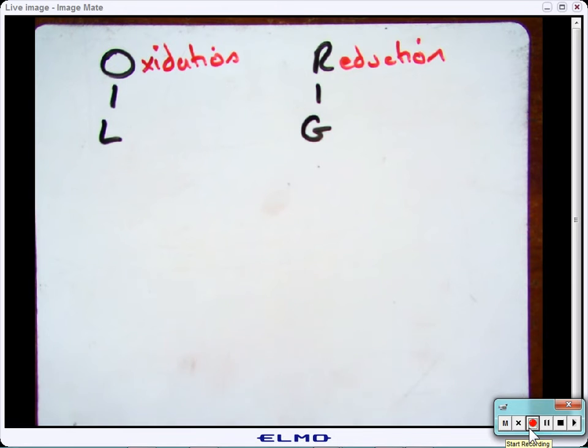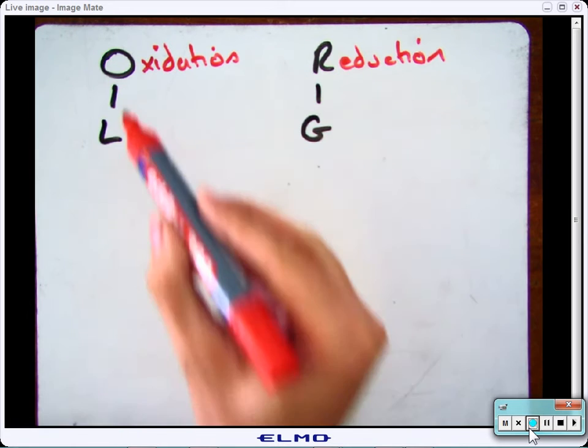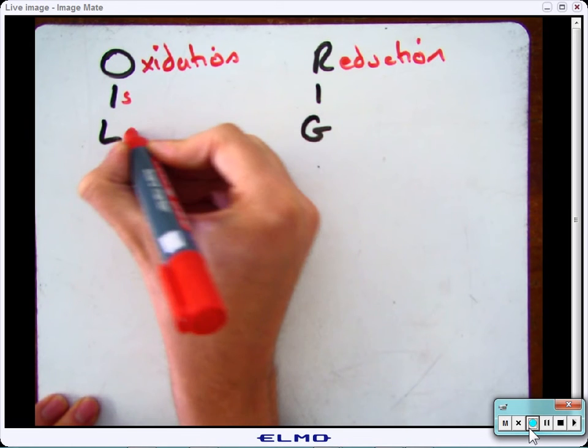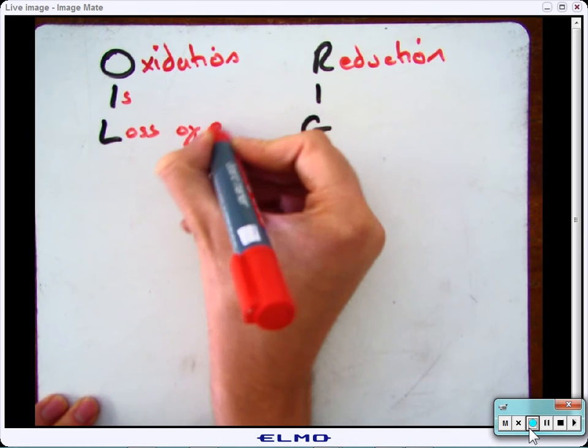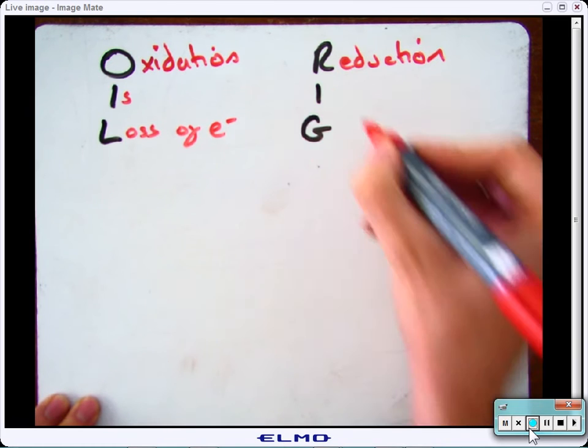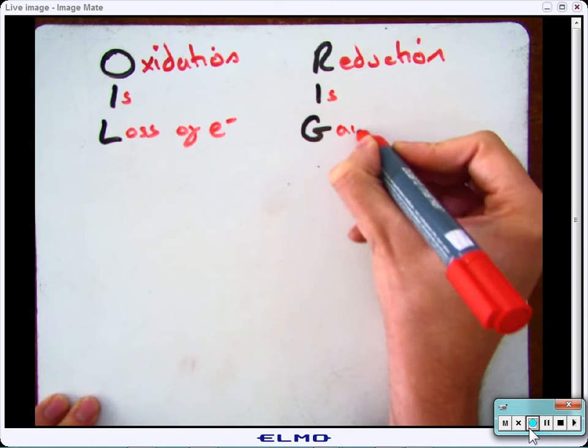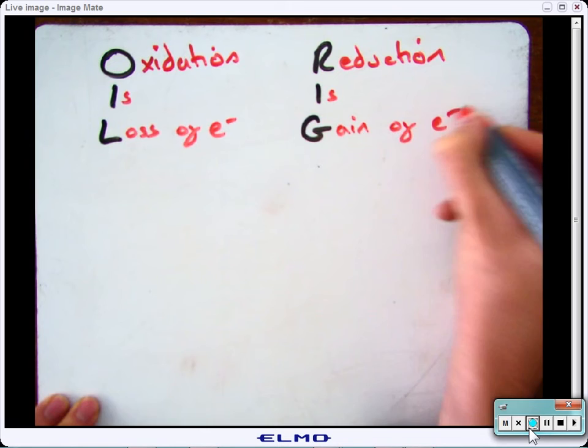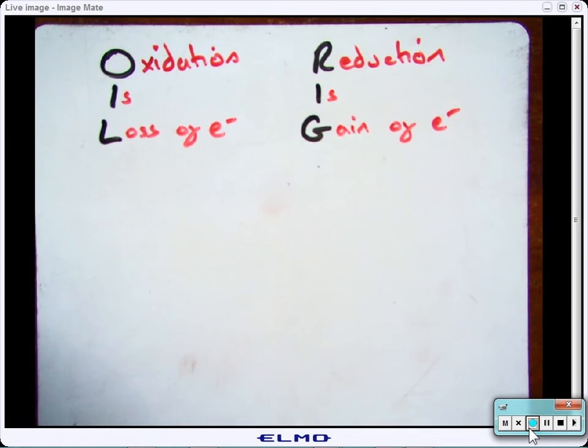You might remember, back from year 10, that oxidation is the addition of oxygen and reduction is the removal of oxygen. Another way of remembering it is to do with electrons. So, oxidation is the loss of electrons and reduction is the gain of electrons. And I'll just show you what I mean by that now.